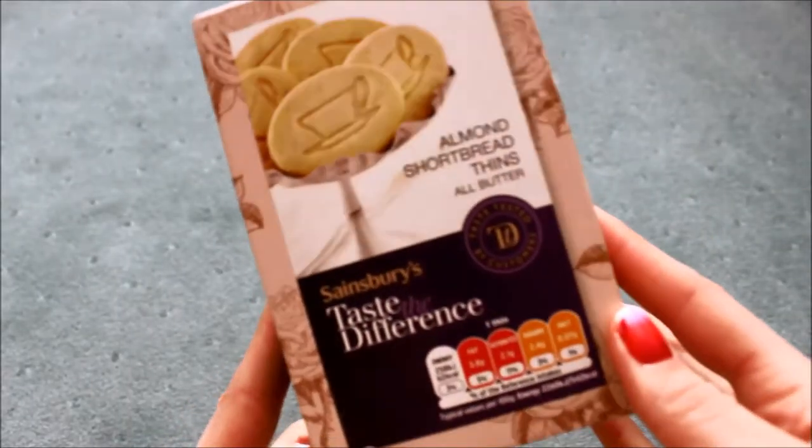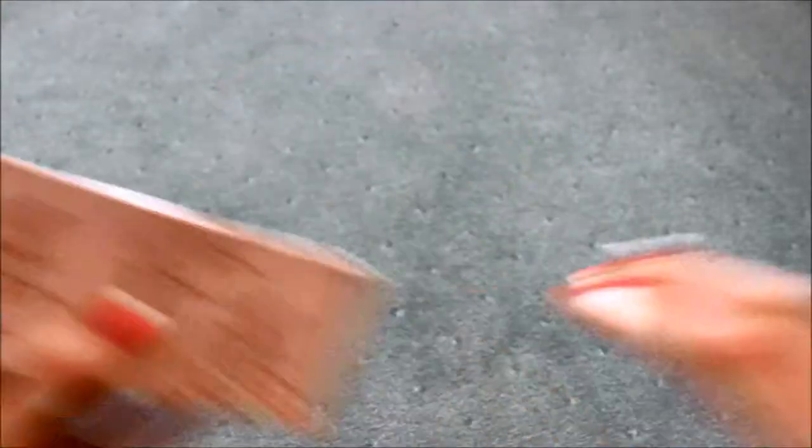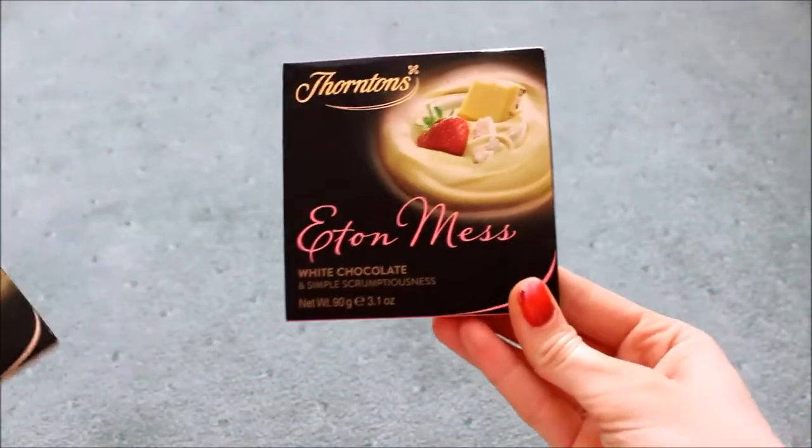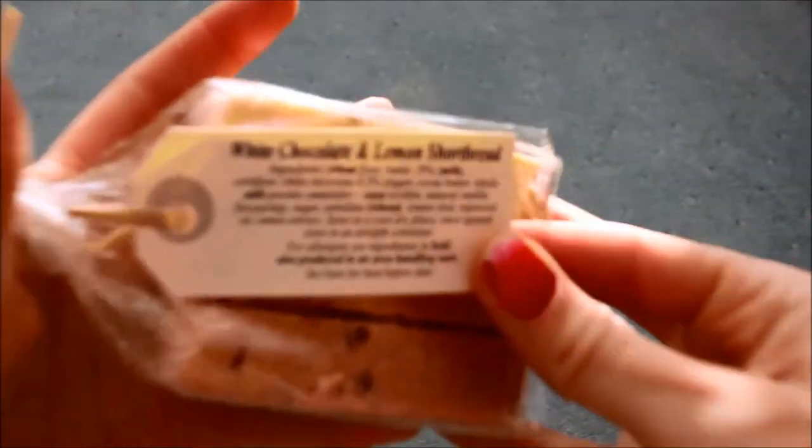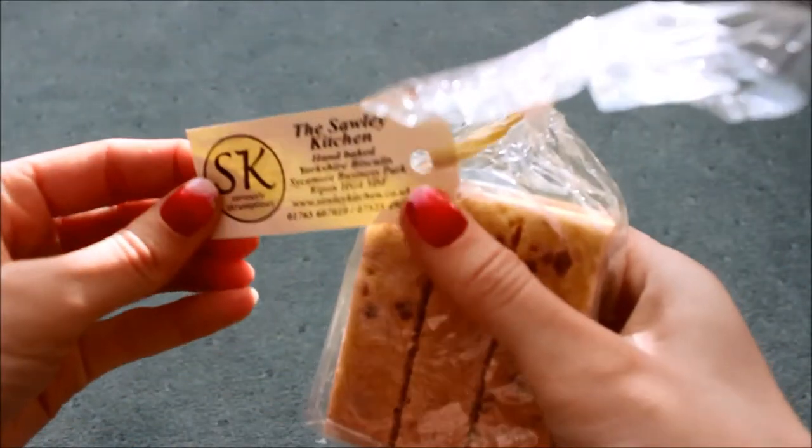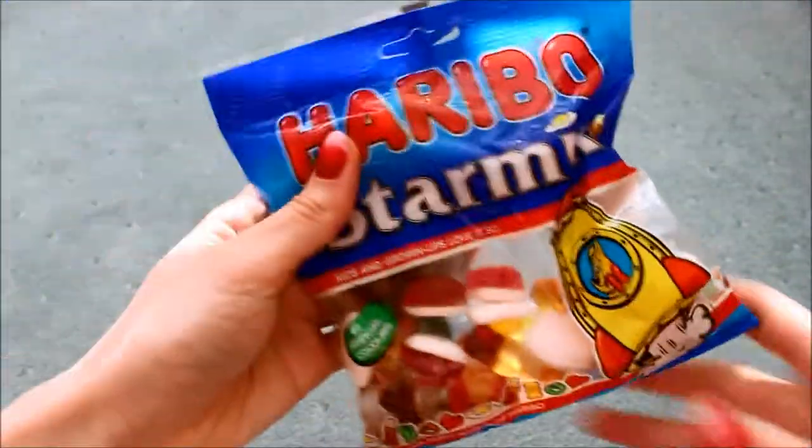I'm going to get started. First, food items. I got these Sainsbury's almond shortbread thins Taste the Difference biscuits which will be so nice. I got Thornton's Eton mess white chocolate and Thornton's normal white chocolate. I think you'll see a recurring theme here - I got white chocolate and lemon shortbread by the Sawley Kitchen, which looks yummy.